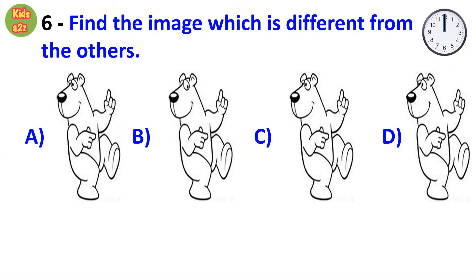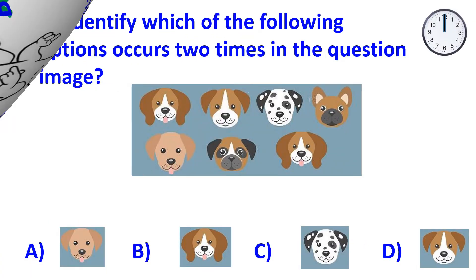Question number 6: Find the image which is different from the others. Answer is option B, because its eye is looking in a different direction.